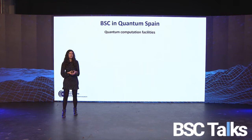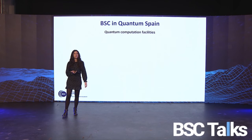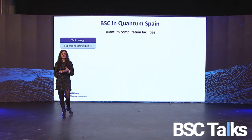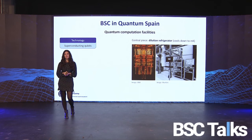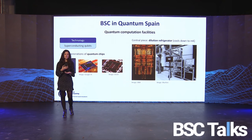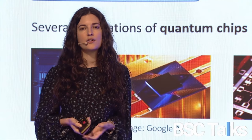Let me explain BSC's specific role in this project. First, quantum computation facilities: we will use a technology called superconducting qubits. The central piece is a dilution refrigerator — a large fridge that cools down to millikelvin, which is minus 273 degrees Celsius. Inside these large fridges, at the bottom, we will have different quantum chips. The goal is to start with a few qubits and scale up until the end of the project in 2025, adapting to state-of-the-art technology as new quantum chips and properties are discovered.